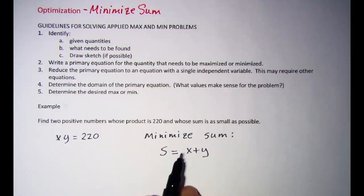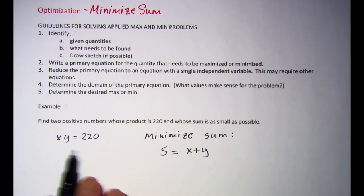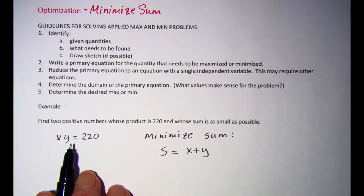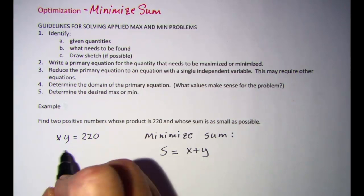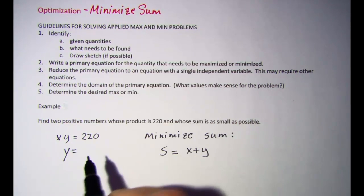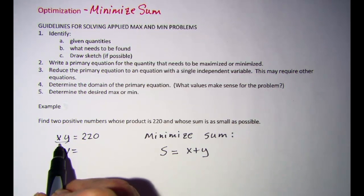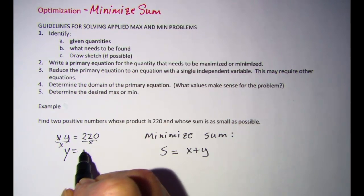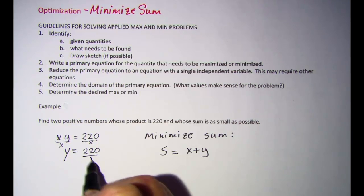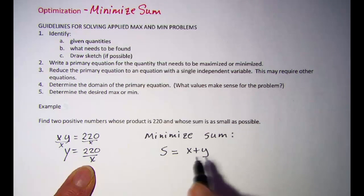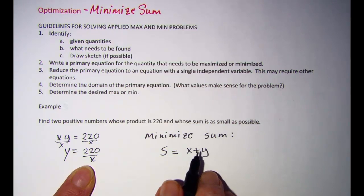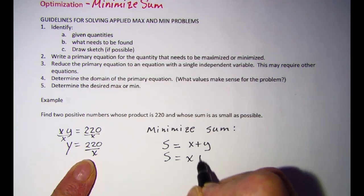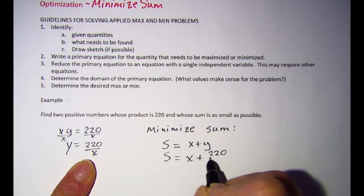What we want to do is use the constraint equation to find an expression for either x or y. I'm going to solve for y in terms of x, so I'll divide both sides by x. That gives us y is equal to 220 divided by x. I'm then going to substitute that expression into the primary equation, so my sum is s equals x plus 220 divided by x.